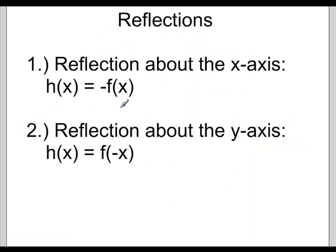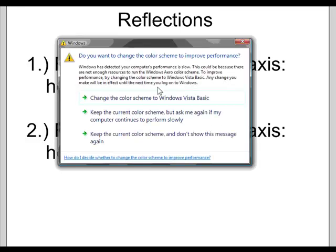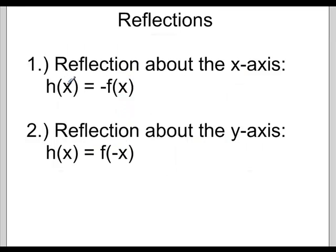Alright, our next transformation is a reflection. We can either reflect a graph about the x-axis or the y-axis. In order to flip a graph across the x-axis, we take the whole thing and put a negative in front of it.